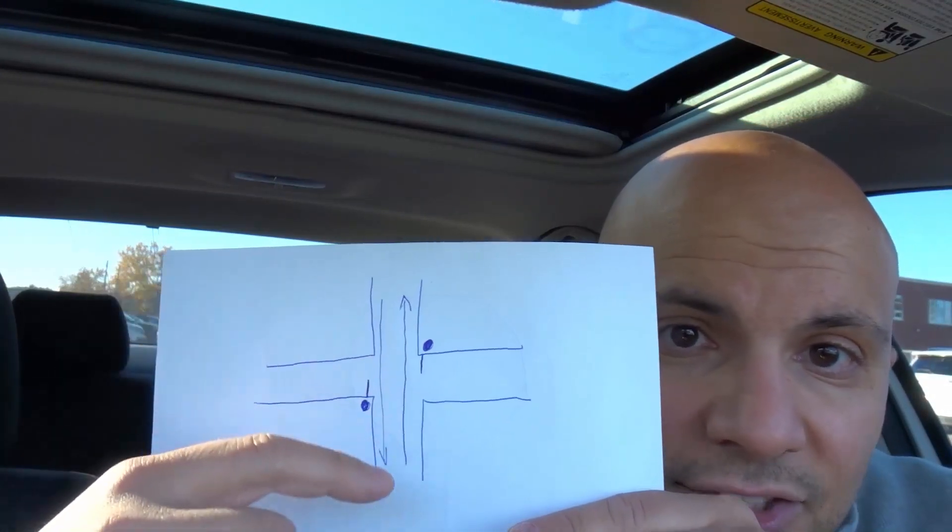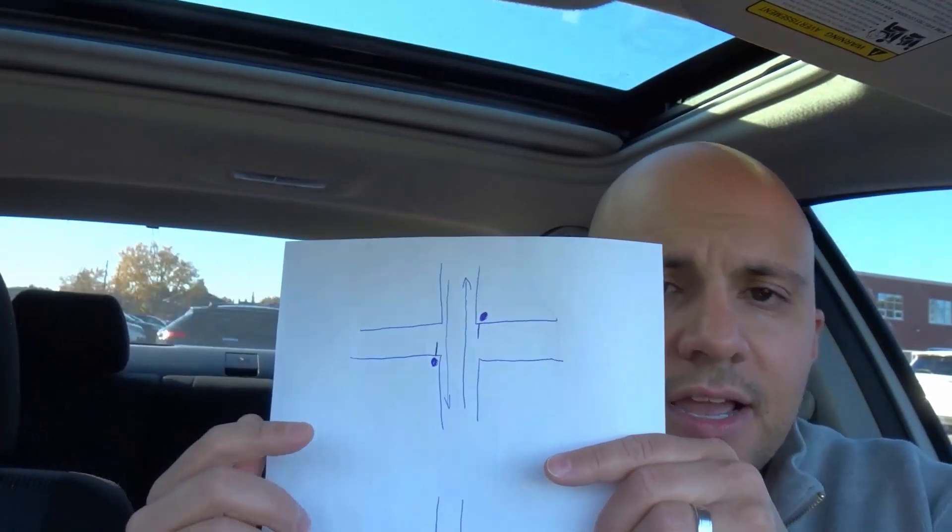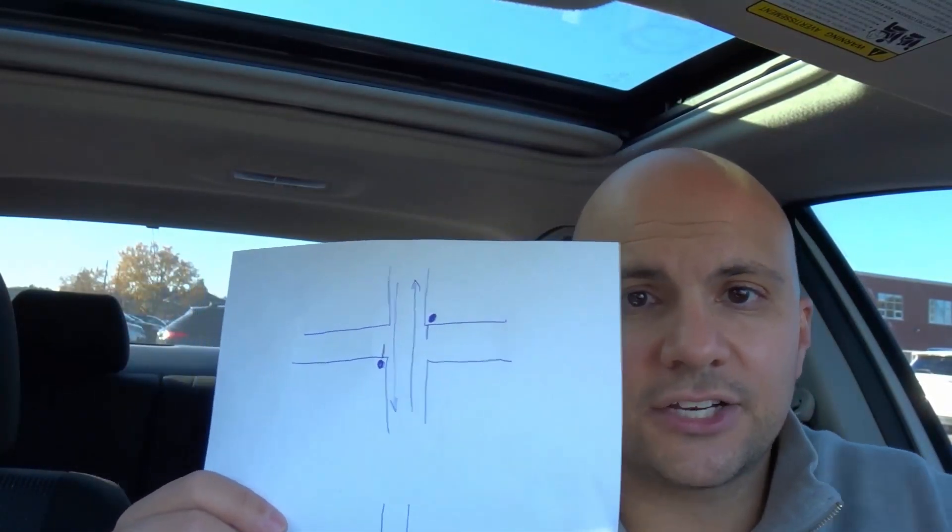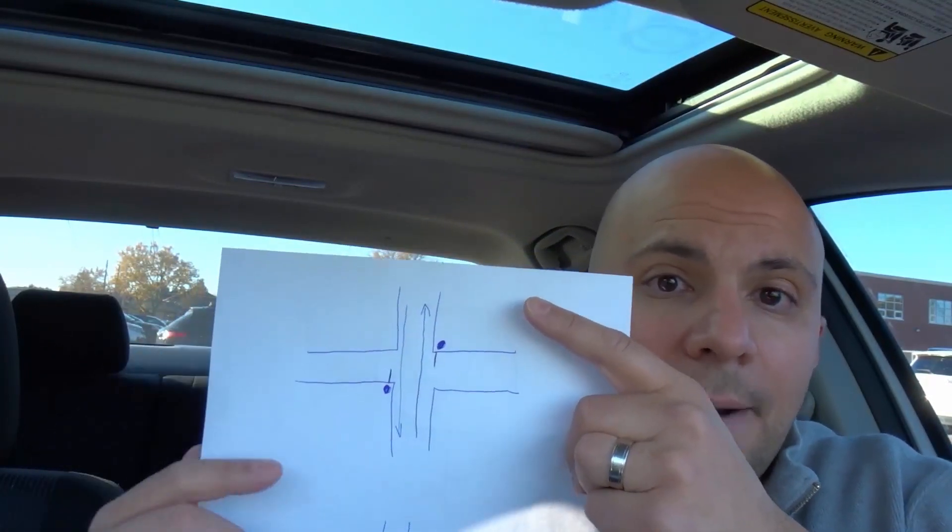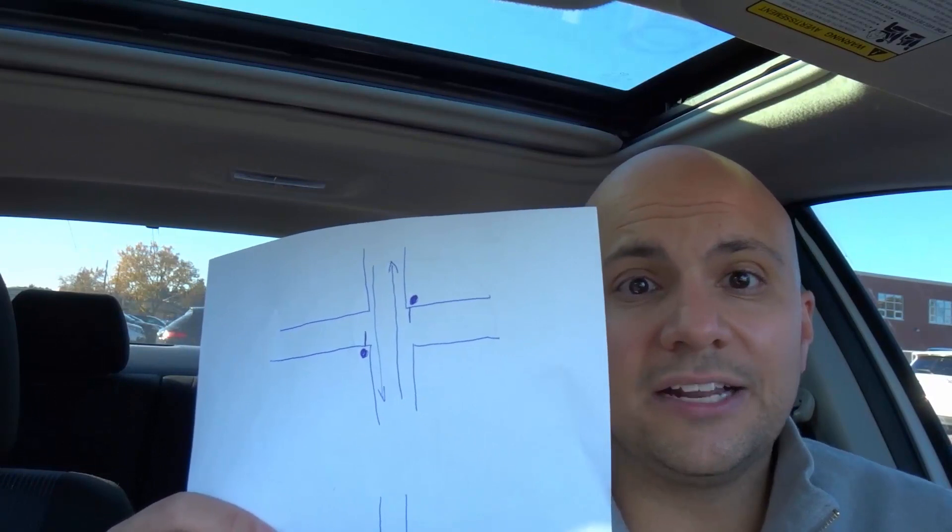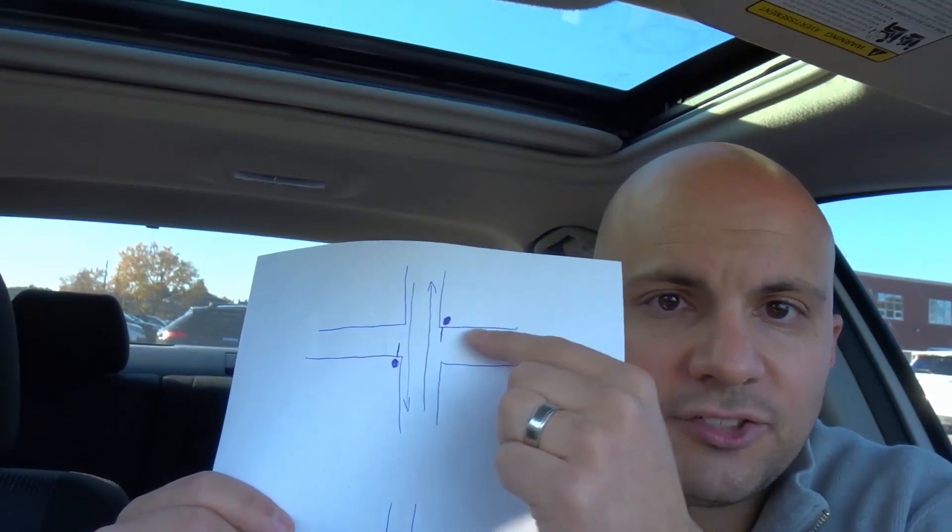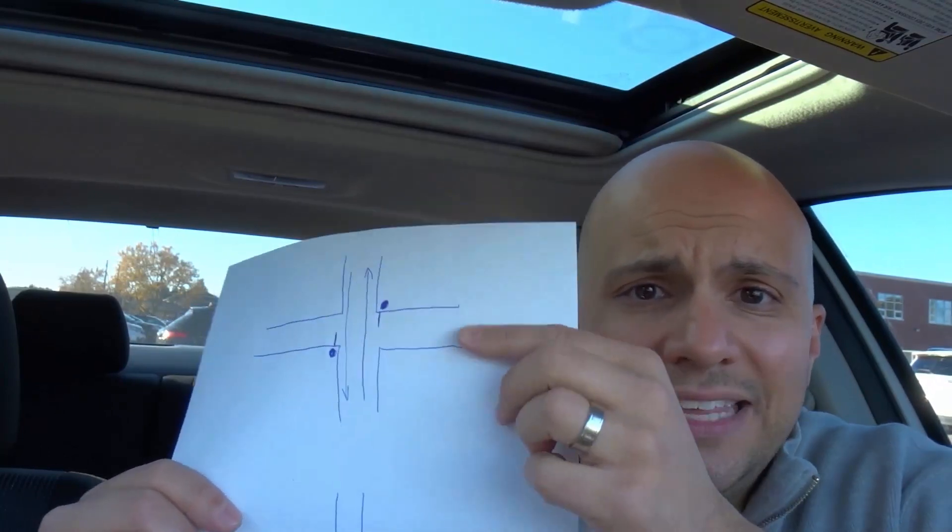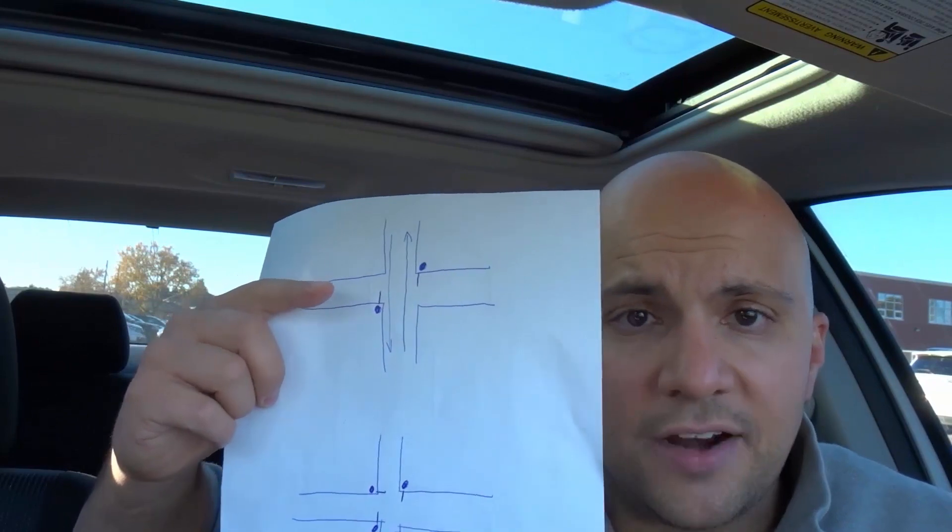And then these directions, there are arrows. So the cars going up and down over here can drive right through that intersection. So the cars going side to side have to stop, but the cars going up and down can drive right through the intersection. This is called a through intersection for them, and it's a stop intersection for them. Very simple.